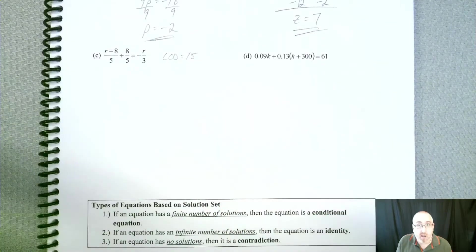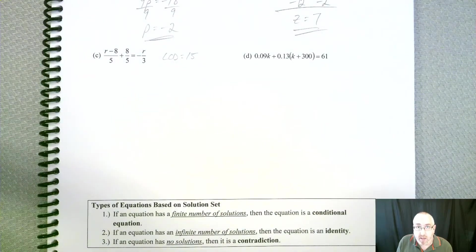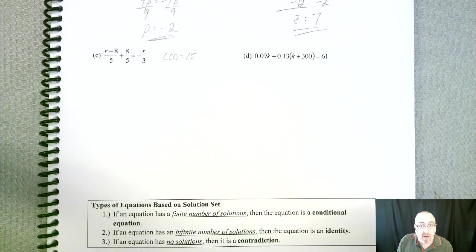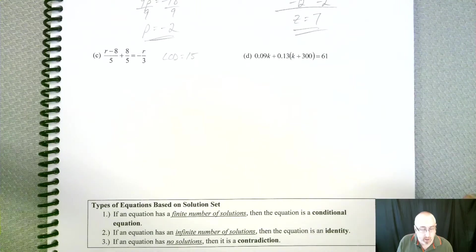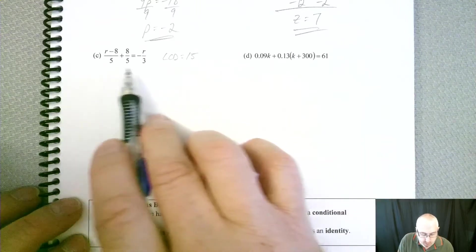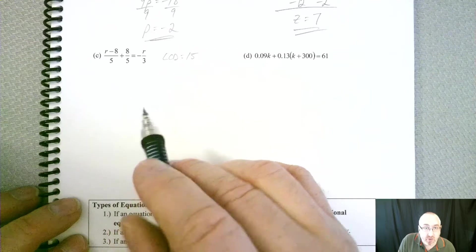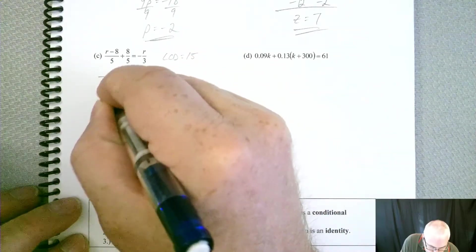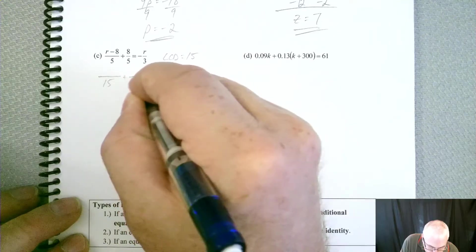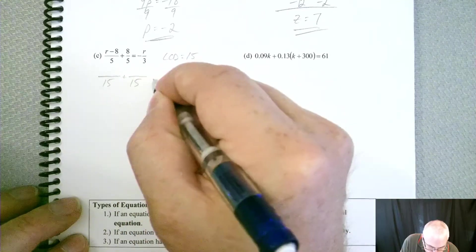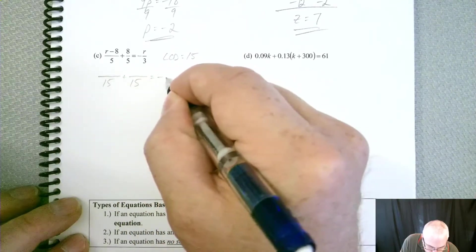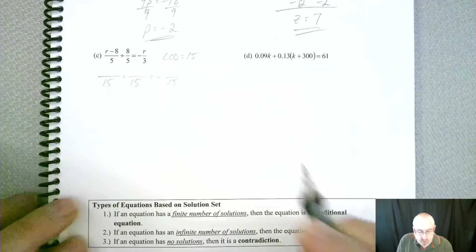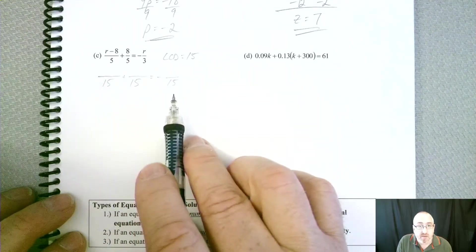So remember, if you're stuck, you can always multiply them together. It might not be the least, but it will work. So now what you want to do is change all of your denominators to 15s.